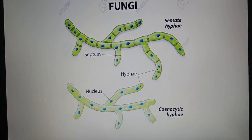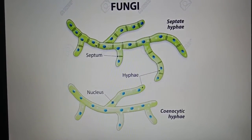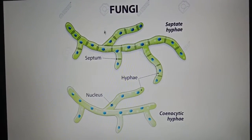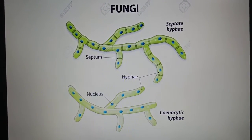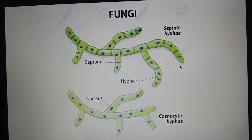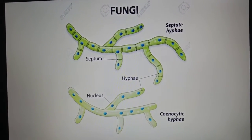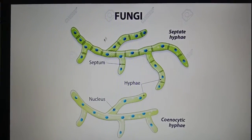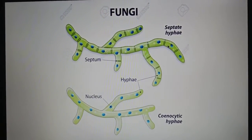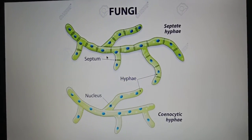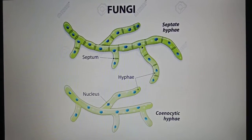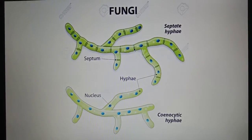Each compartment represents one cell — one cell, two cell, three cell, and so on. This filament is uninucleated, meaning every cell has just one nucleus. So septate hyphae have walls or septa at regular intervals and are uninucleated, with one nucleus per cell.